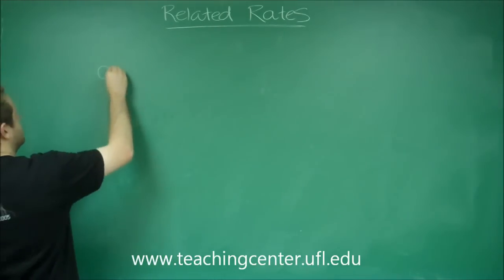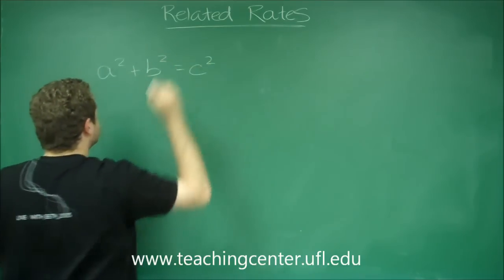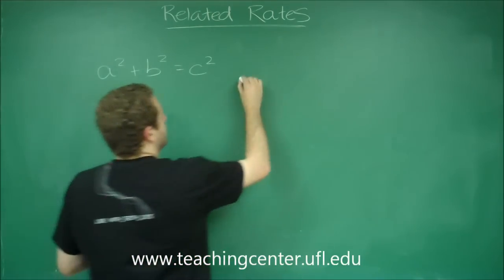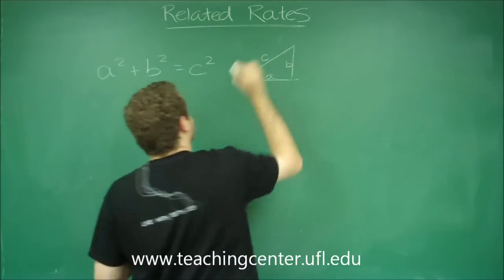So let's just do an example where it's Pythagorean theorem. A squared plus B squared equals C squared is a relationship of the three sides of a right triangle. Let's call this A, B, and C.